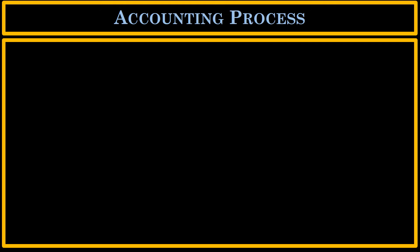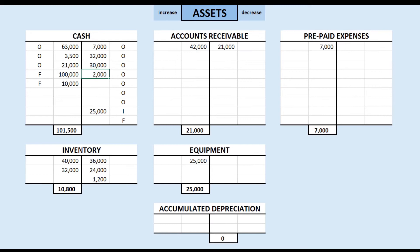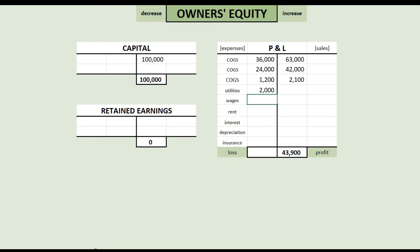Transaction 15: during the year, BM paid $8,000 cash in wages to its employees. If you said this looks exactly like the utilities transaction — $2,000 in utilities that BM paid in cash — it is the same. You would account for it the same way. Wages are also an operating cash flow. We're paying our employees as part of our operations to sell widgets. So we reduce our cash account by $8,000.